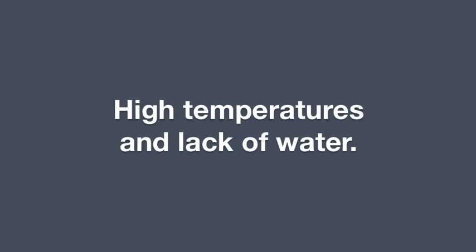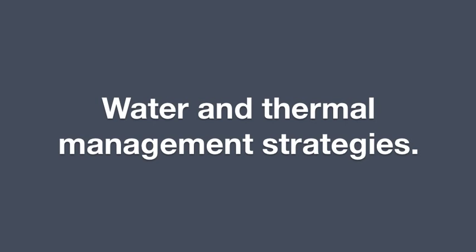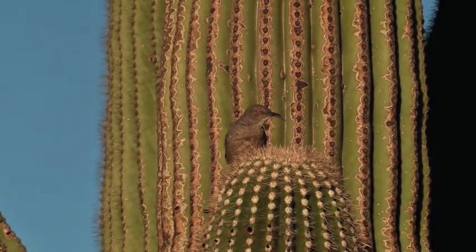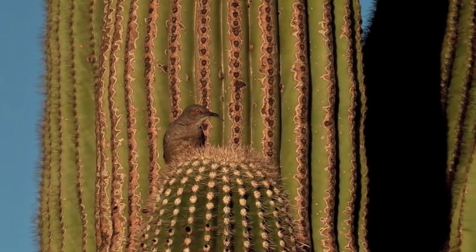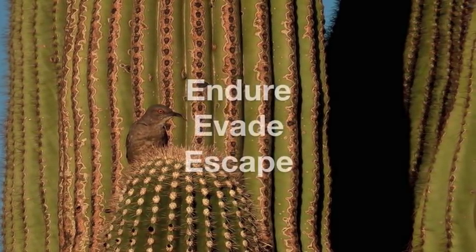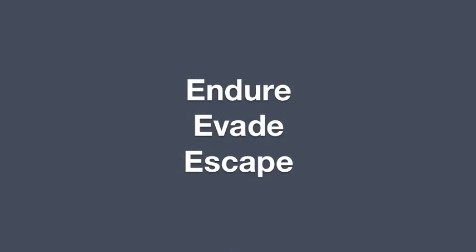Overall, the two greatest environmental challenges facing everything that lives in the Sonoran Desert are high temperatures and lack of water. In order to survive successfully in this environment, plants and animals must develop water and thermal management strategies. The basic adaptations are to endure, evade, or escape the lack of water and the high temperatures.